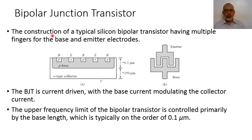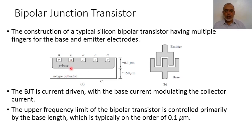The construction of a typical silicon bipolar junction transistor uses multiple fingers of base and emitter electrodes. Here we have two fingers for the emitter and three fingers for the base; the number of fingers can be increased. The bipolar junction transistor is current-driven, controlled by the base current which modulates the collector current. The upper frequency limit is controlled primarily by the base length, which is typically of the order of 0.1 micrometers.